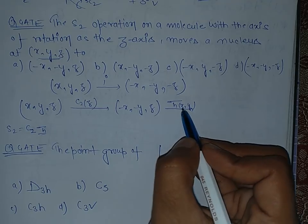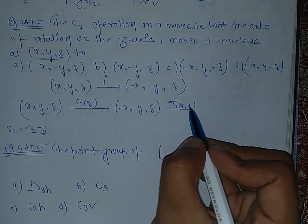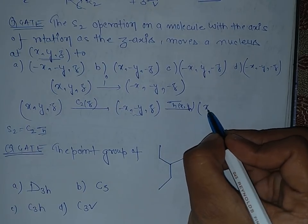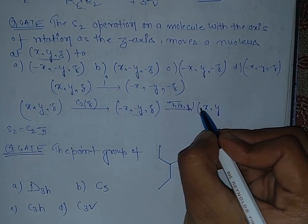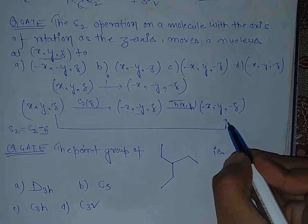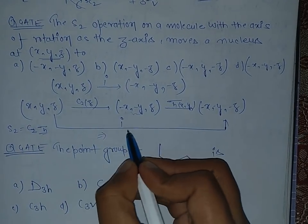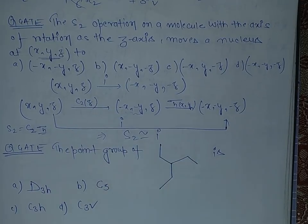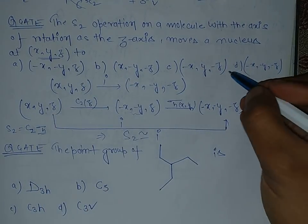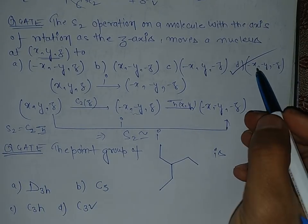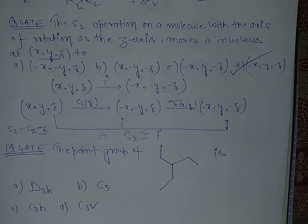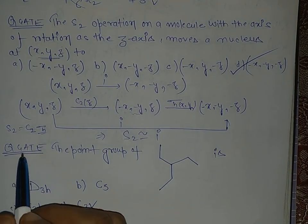Now see, this z axis will get converted into minus z, and since we are passing from x and y, these will remain unaffected. So this is x, this is y - minus x, minus y - and this will become minus z. So this is also i operation, that means S2 is equivalent to i. So if we pass S2, that means it is equal to i. So D is the right answer: minus x, minus y, and minus z.